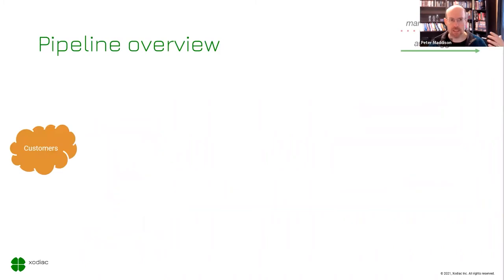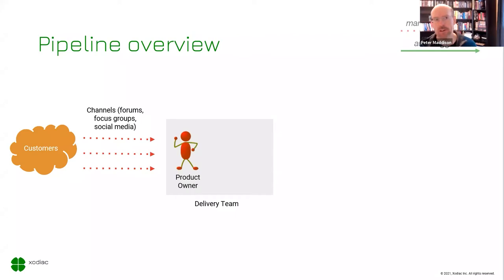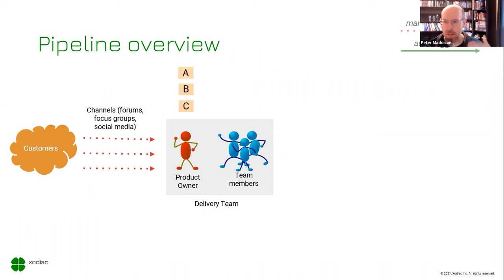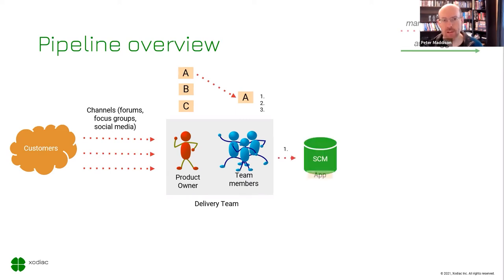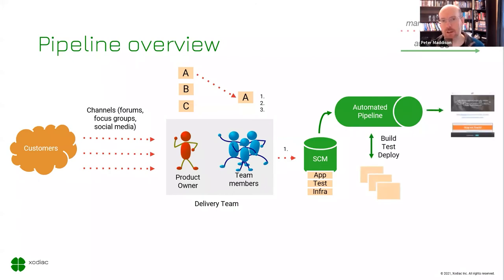When we think of DevOps, we think of pipelines — and not just in terms of tooling and automation. Think about the end-to-end stream of value we create. If customers provide requirements through channels, forums, focus groups, and social media, a delivery team — a product owner and collaborating team members — works out how to proceed. Together they come up with stories, prioritize, break these into smaller pieces, pick the highest priority and biggest business value, and start to work on that. It turns into application code, test code, and infrastructure code, which CI tooling pulls into an automated pipeline to build, test, and deploy — pushing out a product we can give to customers.